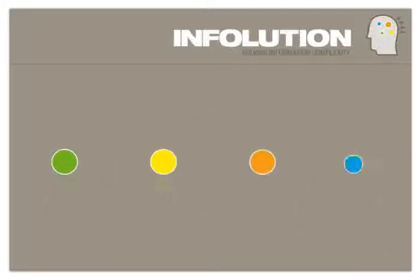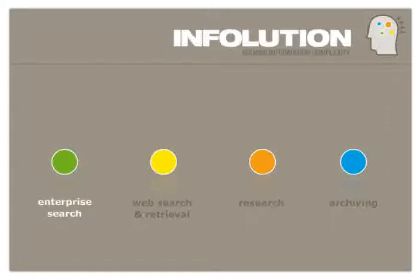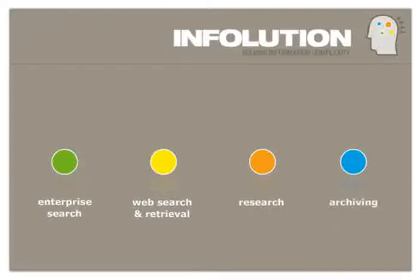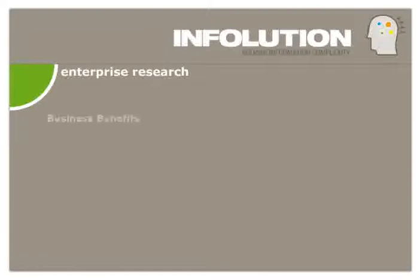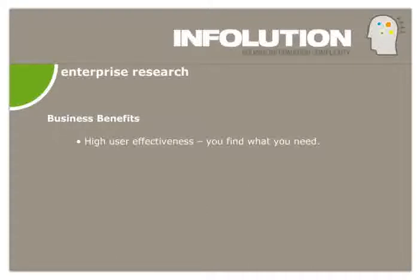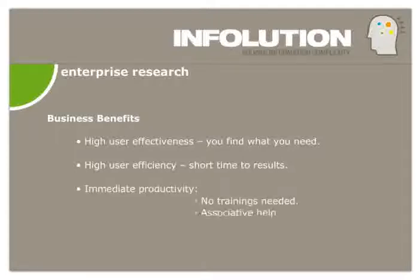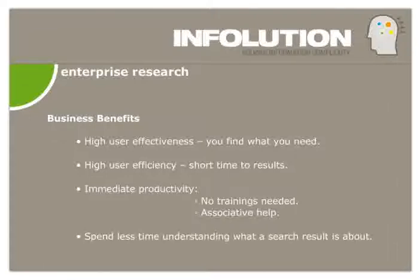InFolution addresses four main areas that require fast and precise access to data: enterprise search, web search and retrieval, research, and archiving. InFolution Enterprise Search enables users to find relevant internal and external enterprise data quickly and accurately. Using associative help, users are guided through their search in any type of enterprise data source from one single point of access, requiring no training. Automatic summaries of data from multiple sources can be made.